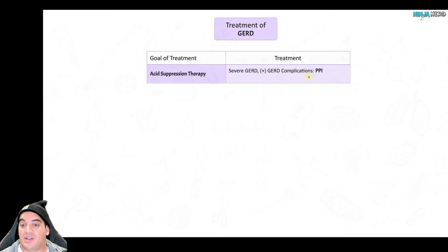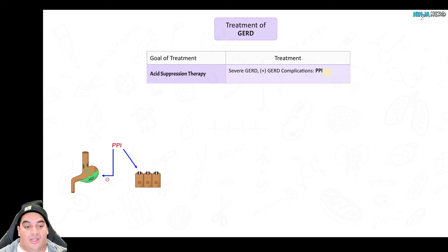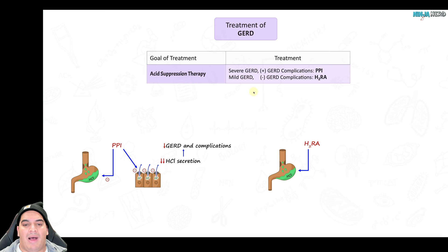For severe GERD and complications, keep the patient on a PPI for at least eight weeks, then reevaluate and see if you can step down. PPIs work by blocking hydrogen proton ATPase channels, reducing hydrochloric acid secretion, which reduces GERD and its associated complications.